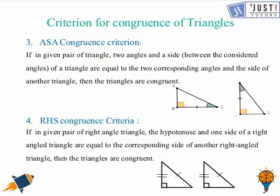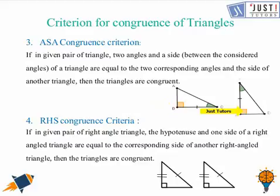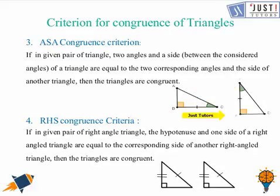Then we have ASA — Angle-Side-Angle criterion. This states that if in a given pair of triangles, two angles and a side are equal to the corresponding parts of another triangle, the triangles are congruent. For example, the angle shown in green is equal to its corresponding angle, and side BC equals the corresponding side. So we can say that these two triangles are congruent by the ASA criterion.